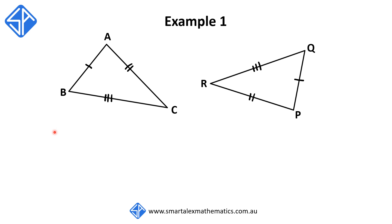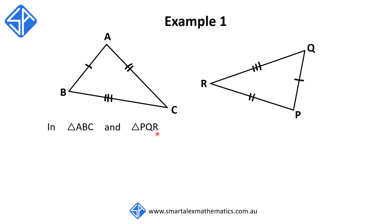For the introduction, you're going to introduce which two triangles we're looking at. In this example, it's triangle ABC and triangle PQR. We write: in triangle ABC and triangle PQR. Note that we want to make sure that the order of the vertices correspond to each other — so A corresponds to P, B corresponds to Q, and C corresponds to R.